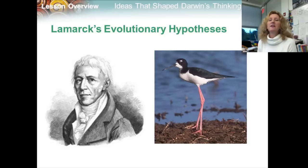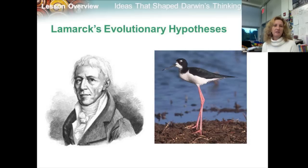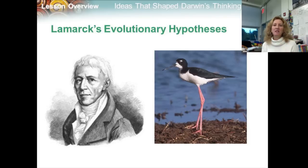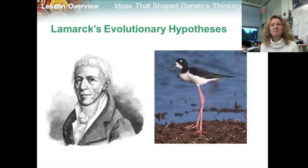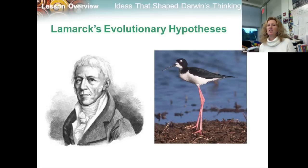Throughout the 18th century, a growing fossil record supported the idea that life somehow evolved, but ideas differed about just how life evolved. In 1809, the French naturalist Jean-Baptiste Lamarck proposed a hypothesis that organisms could change during their lifetimes by selectively using, or not using, various parts of their bodies. He also suggested that individuals could pass these acquired traits onto their offspring, enabling species to change over time.